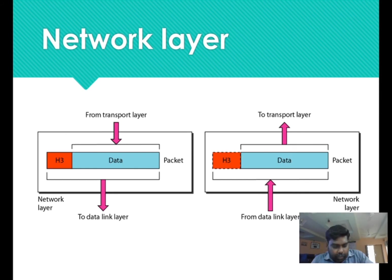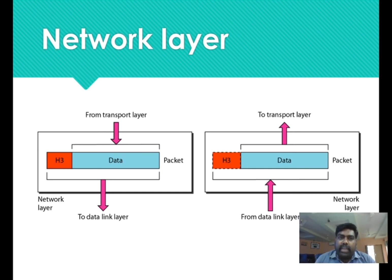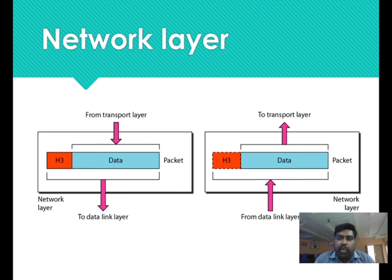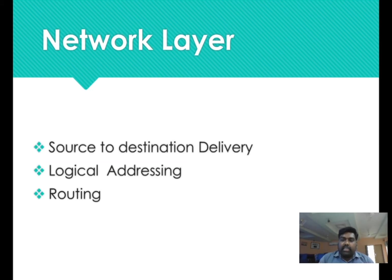Next very important concept is the network layer. Network layer is in the path and it also performs source to destination delivery. Every data link layer is in the path. This is a very important layer. What is the responsibility of source to destination delivery?